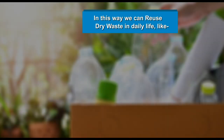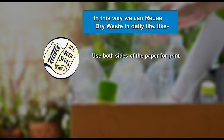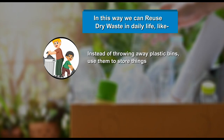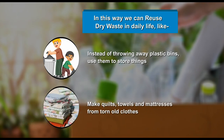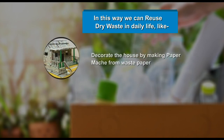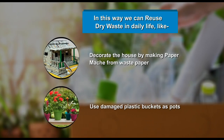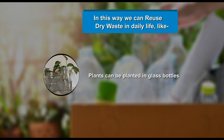Ways to reuse dry waste in daily life: Use both sides of paper for printing. Buy a new ink refill instead of a new pen. Instead of throwing away plastic bins, use them to store things. Make quilts, tiles and mattresses from torn old clothes. Decorate the house by making paper mache from waste paper. Use damaged plastic buckets as pots. Plants can be planted in glass bottles.